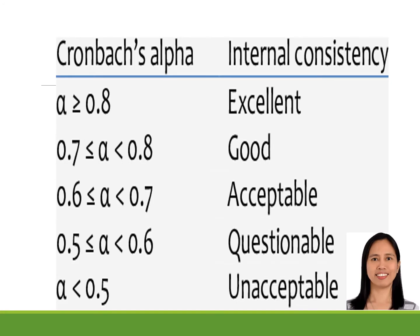This slide shows the value of Cronbach alpha and its equivalent verbal interpretation of internal consistency. 0.5 and less is unacceptable. Less than or equal to 0.6 is questionable. 0.6 to 0.7 is acceptable, although it's very low, but the researcher can now use it to administer such instrument. 0.7 to 0.8 is good, and 0.8 or higher is excellent. The higher the alpha, the better.